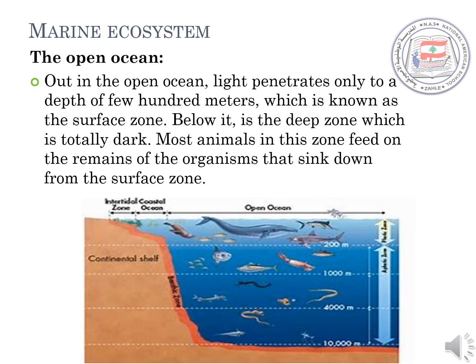Finally, there is the open ocean. Out in the open ocean, light penetrates only to a depth of a few hundred meters, which is known as the surface zone. Below it is the deep zone, which is totally dark. Most animals in this zone feed on the remains of organisms that sink down from the surface zone.